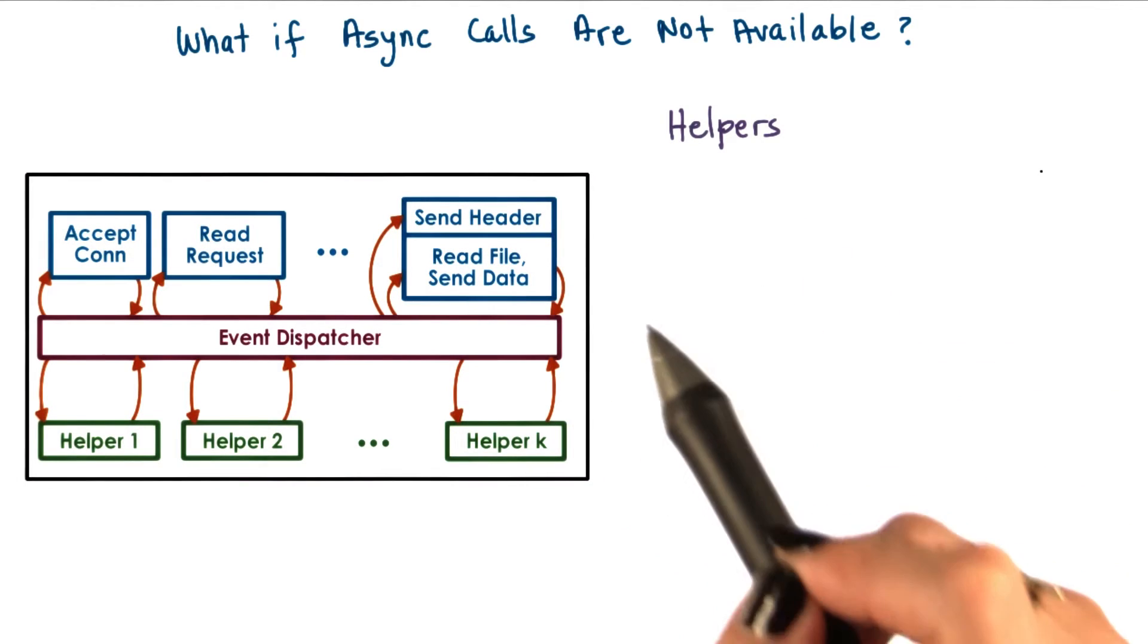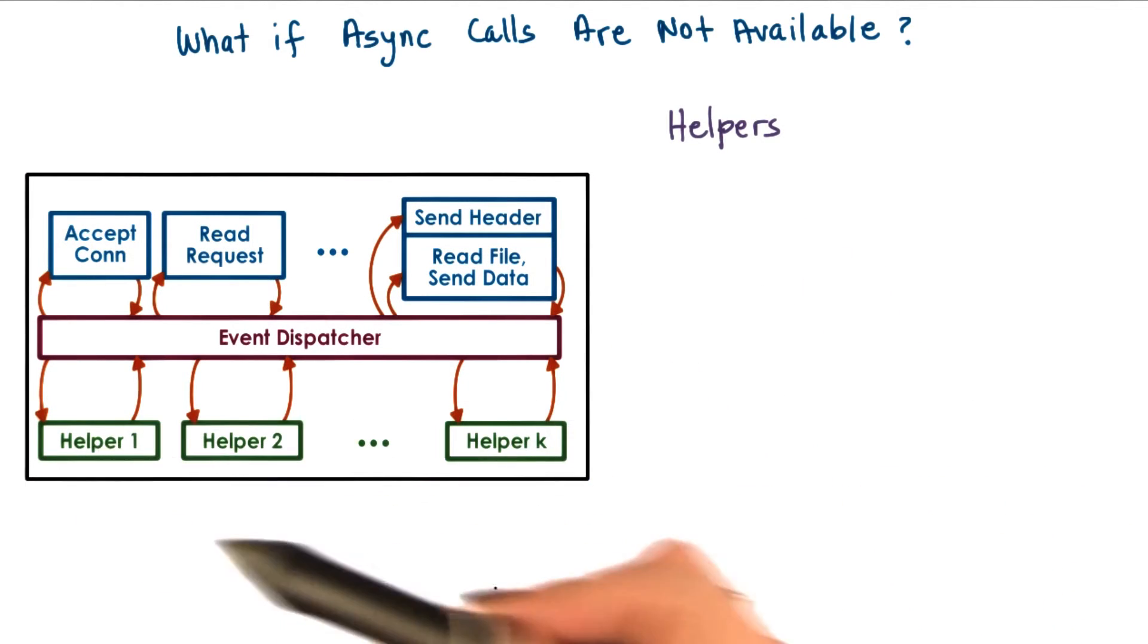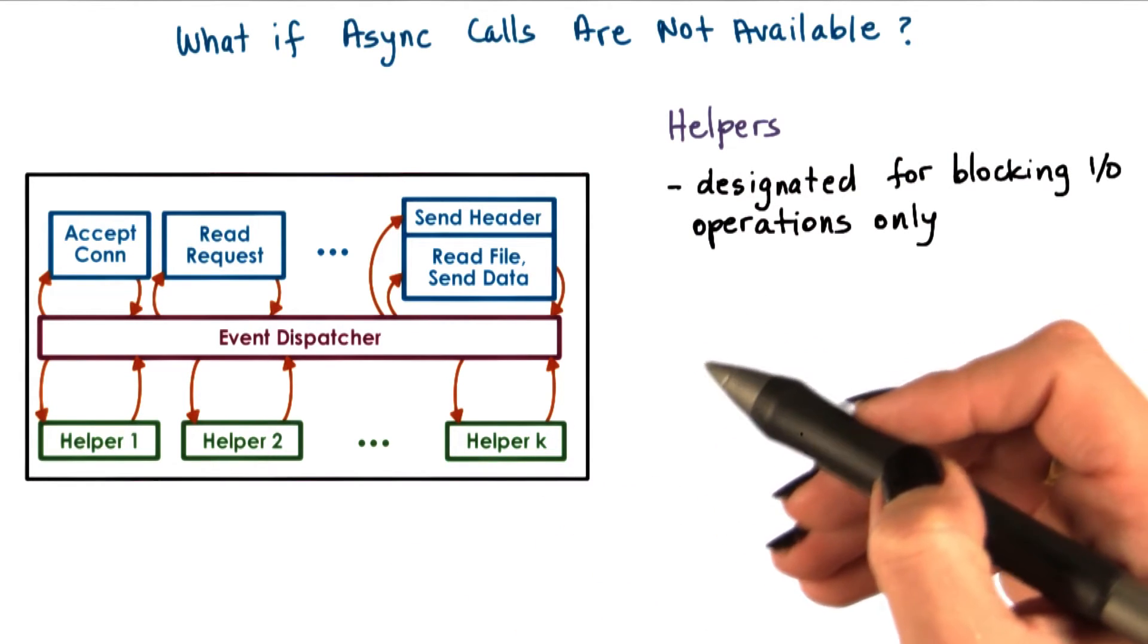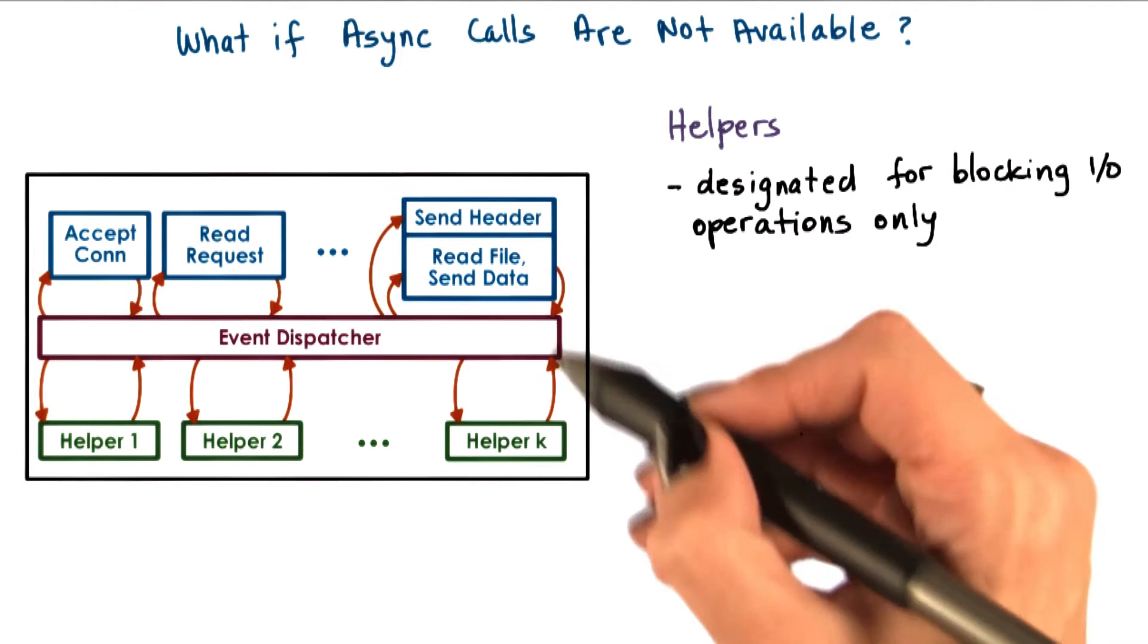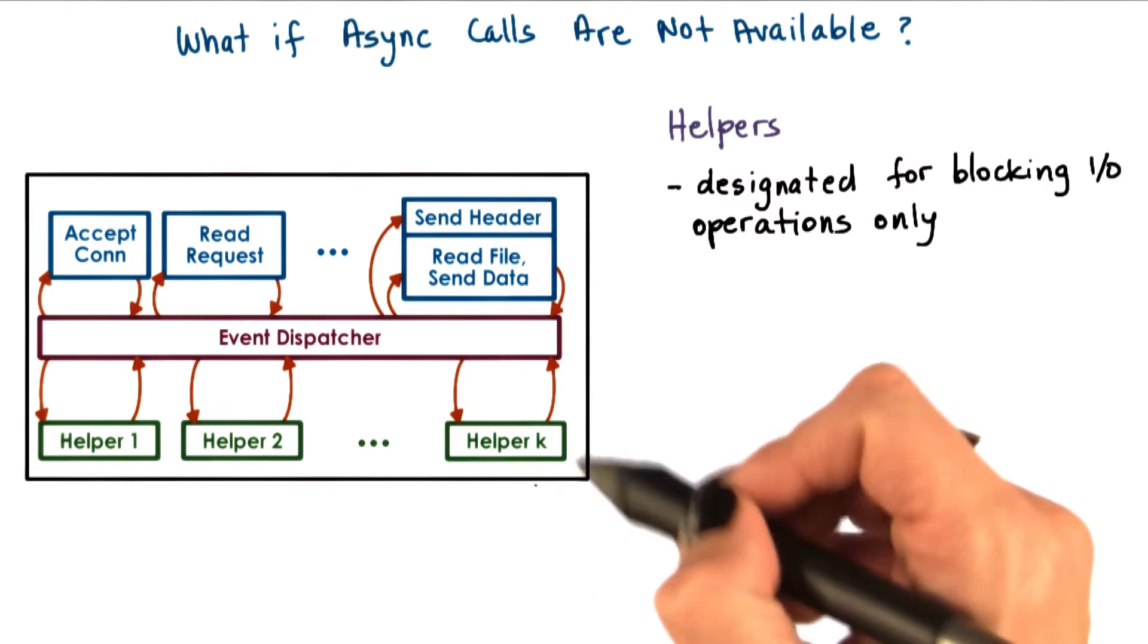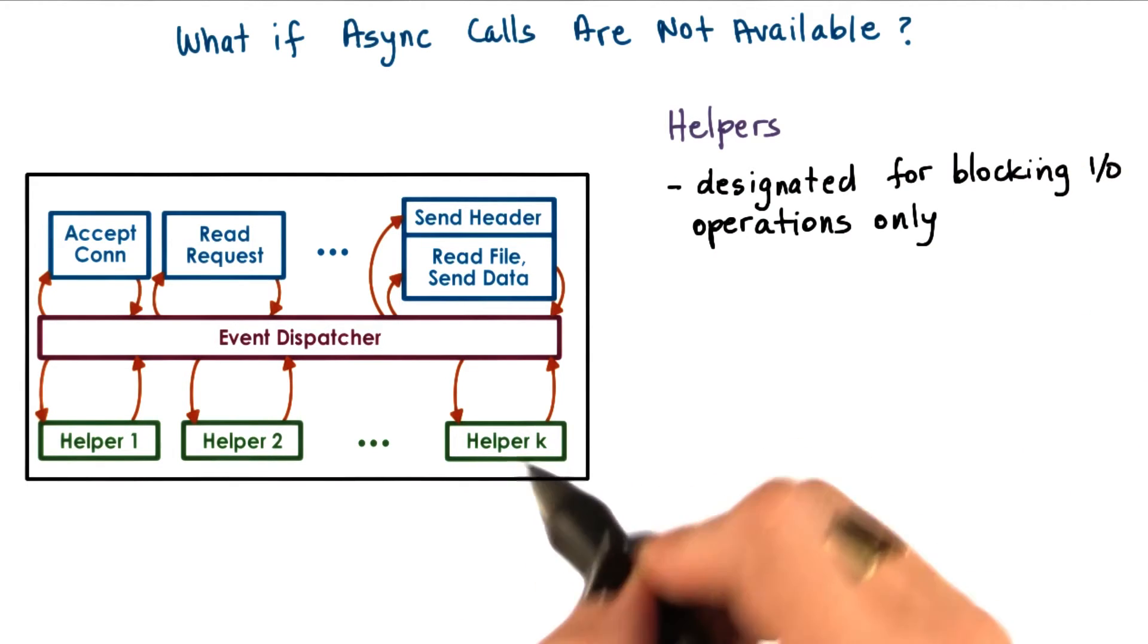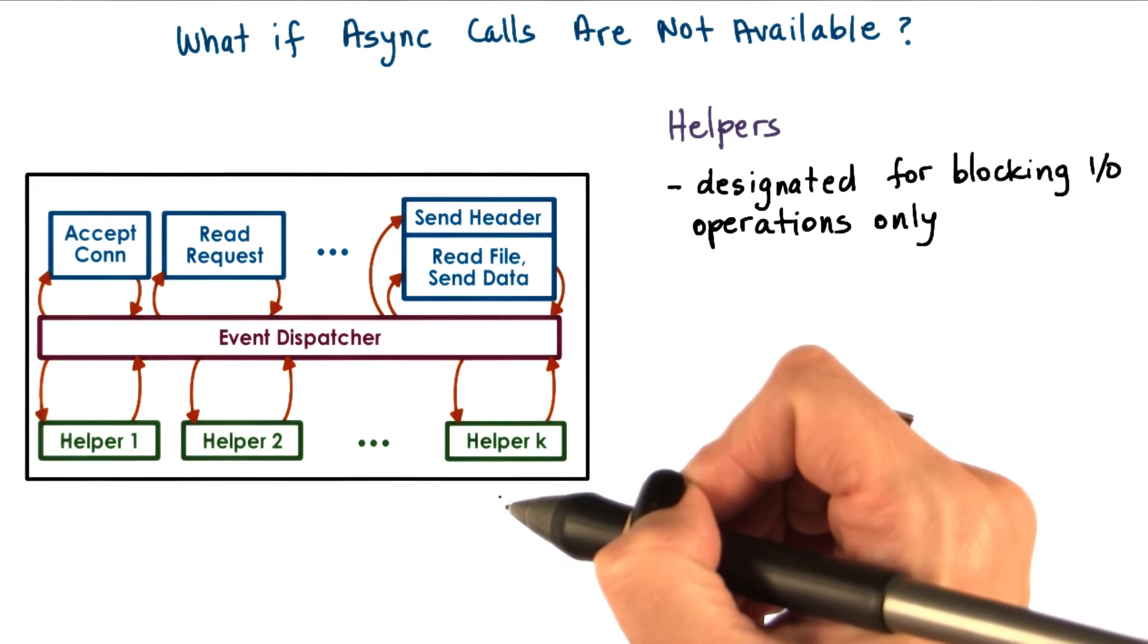To deal with this problem, Vivek Pai's paper proposed the use of helpers. When a handler needs to issue an IO operation that can block, it passes it to the helper and returns to the event dispatcher. The helper will be the one that will handle the blocking IO operation and interact with the dispatcher as necessary.